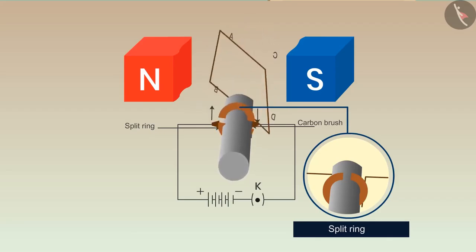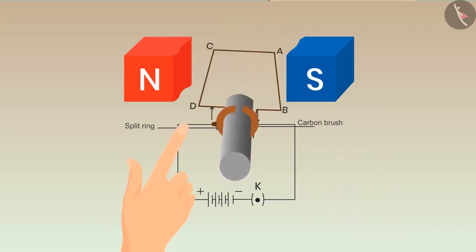Split ring. Split ring is introduced in the system to keep the rotation in one direction only. Split ring is a special kind of ring which has two halves. The ends of the coil are connected with these halves which are then connected to the circuit with the help of carbon brushes, which helps to keep the flow of electric current in one direction only in the circuit.